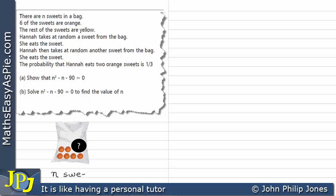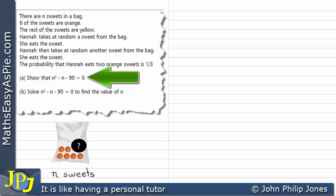This is one of the things we're going to have to find out, because that's what step B is really asking us to do — find the value of N, the total number of sweets in the bag. But first, we have to show that N squared minus N minus 90 equals zero.